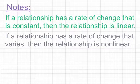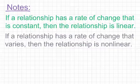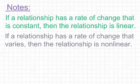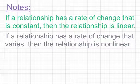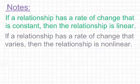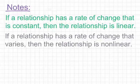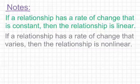If a relationship has a rate of change that varies, then the relationship is non-linear. If you're given a set of ordered pairs, graph them, and they form a straight line, then the data is linear. One thing to look out for: if you're given a graph or a table and there are some missing data values, just because those values are missing does not mean it is not linear. You can have missing data values making it almost look like it's not linear, but it's still linear if the graph is a straight line or the table has a constant Δy over Δx.